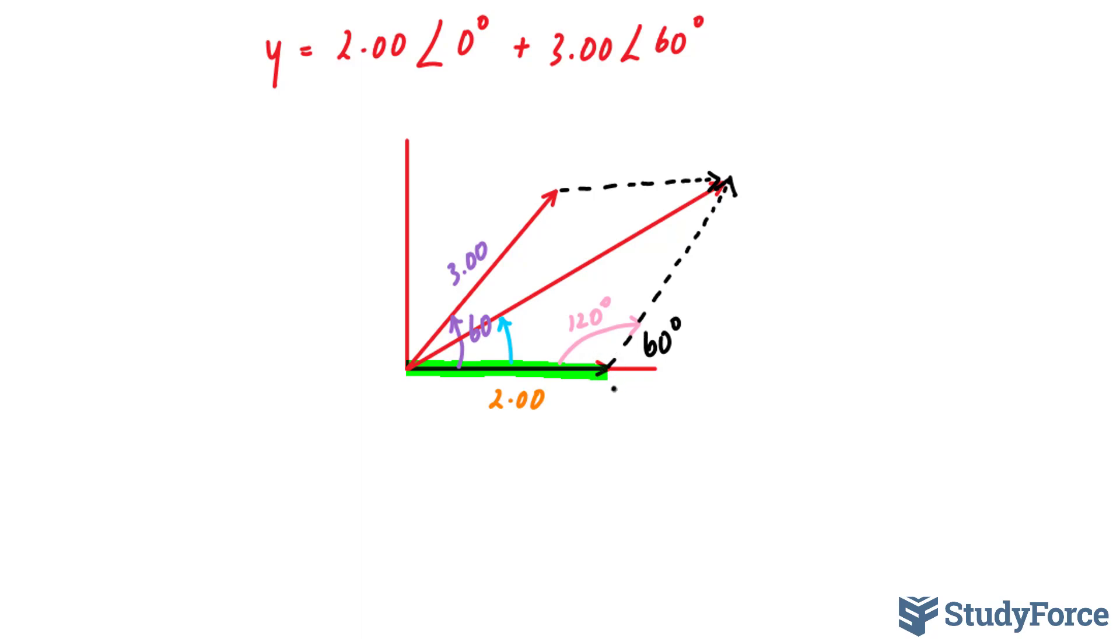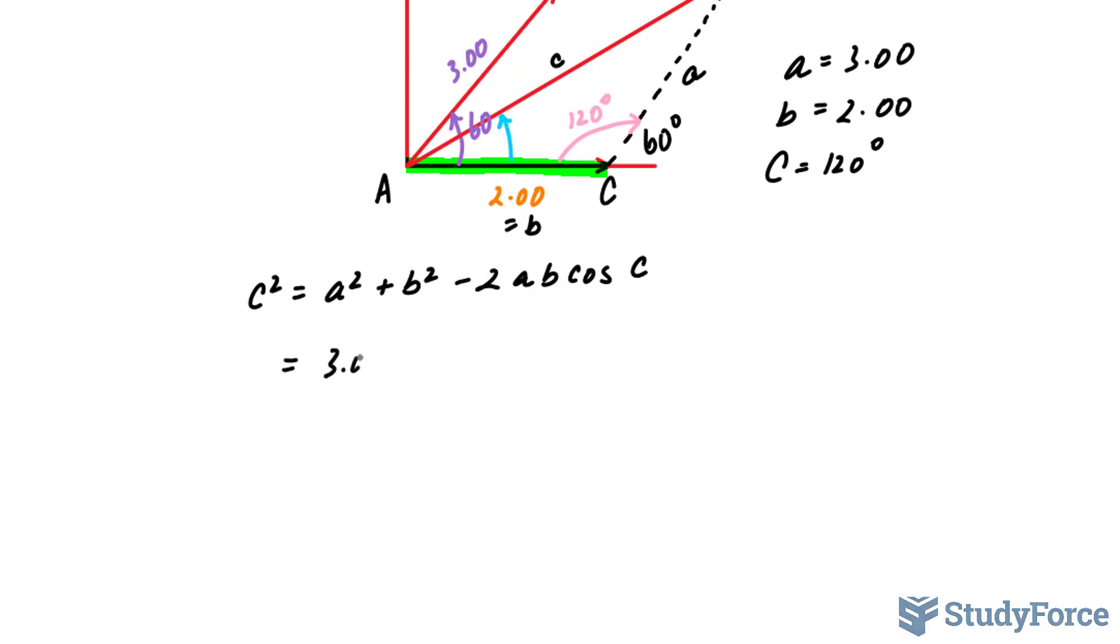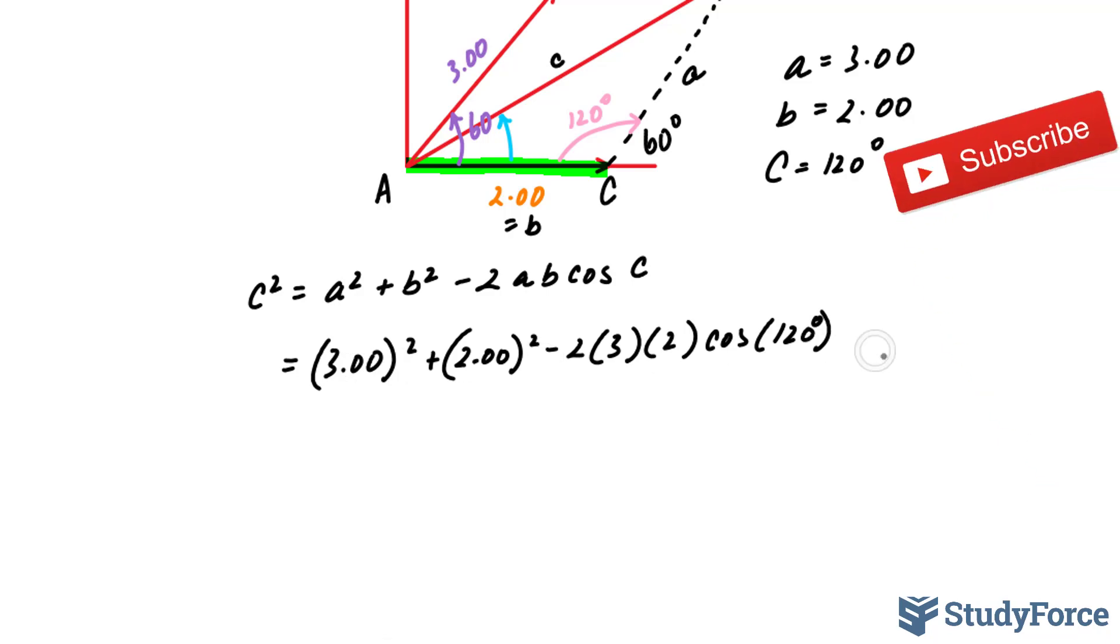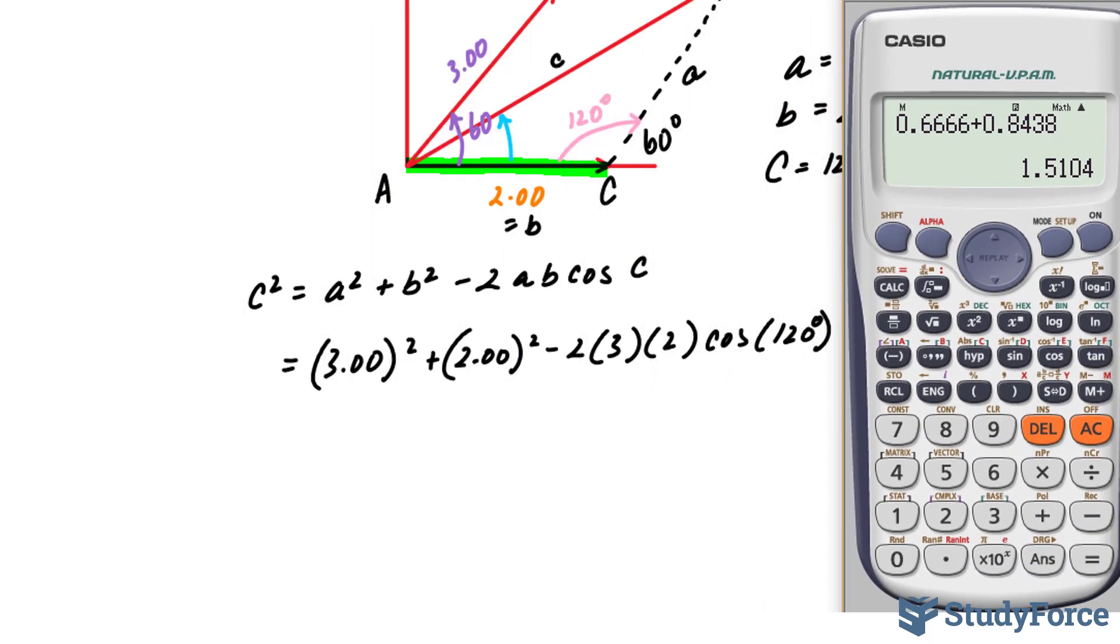I'm going to call this vertex C and this length, which will serve as my resultant magnitude, little c. This will be called big B, big A, little a, and little b. Now I'll substitute everything that I know. 3.00 to the power of 2 plus 2.00 to the power of 2 minus 2 times 3 times 2 times cosine of 120. I'll evaluate everything on the right side with my calculator and then square root, because C is squared.